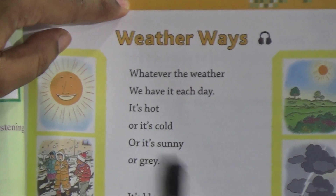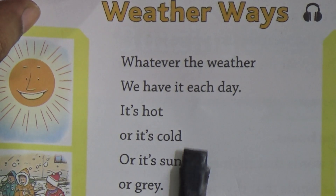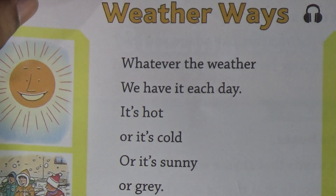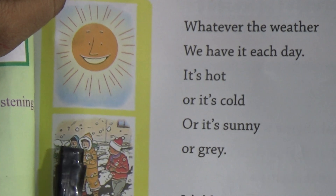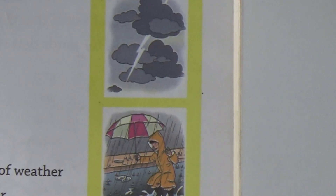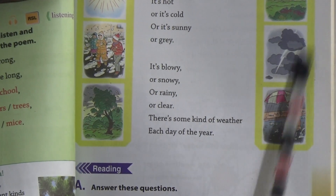Let me read the poem. 'Whatever the weather, we have it each day. It's hot or it's cold, or it's sunny or gray.' This is very hot, this is sunny, this is cold, this is cloudy, this is stormy, this is raining, this is blowing or snowing, this is rainy, this is clear, sunny day.